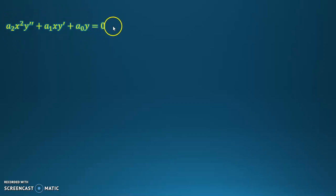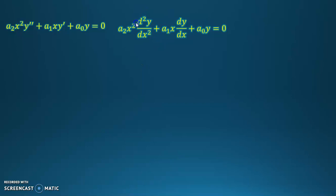This is one way to write this differential equation, but it could be rewritten with the complete notation of the derivative. This equation can be solved with a simple substitution — for example, we can assume that y is equal to x to the power r. Then we can differentiate that function twice and replace that expression in the differential equation.